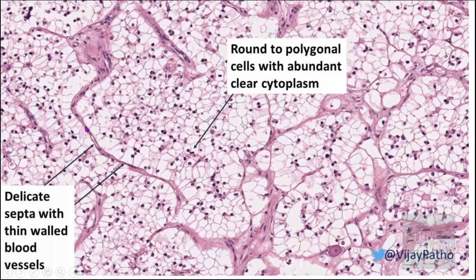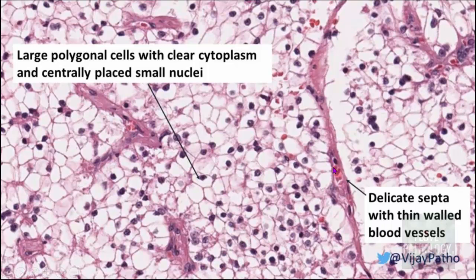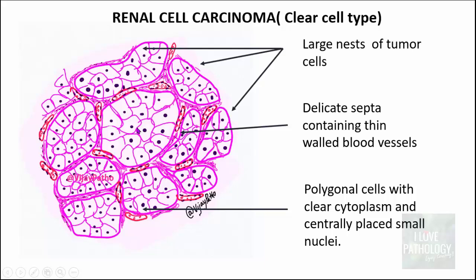At high magnification, these tumor cells are round to polygonal with abundant clear cytoplasm — the cytoplasm appears clear because all lipid and glycogen content is washed out during routine tissue processing. The cells have centrally placed nuclei. The septa are delicate and thin, containing capillaries filled with a few RBCs. For your illustration, draw clusters of large polygonal tumor cells in nests separated by delicate septa containing blood vessels. This is a straightforward slide to diagnose and illustrate.